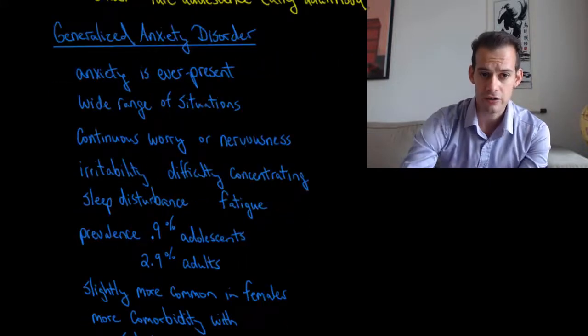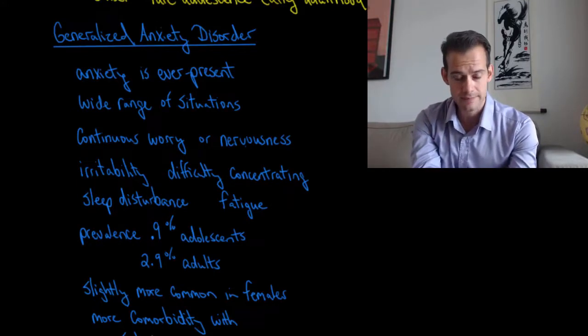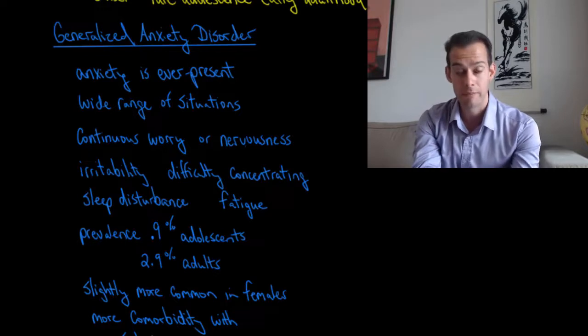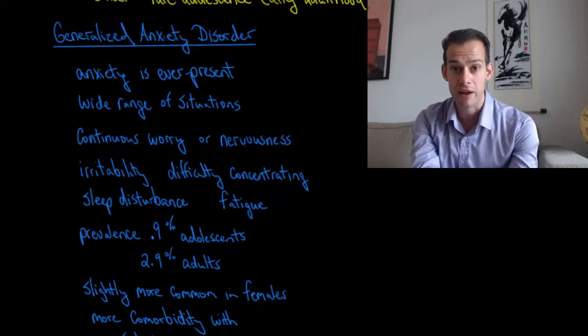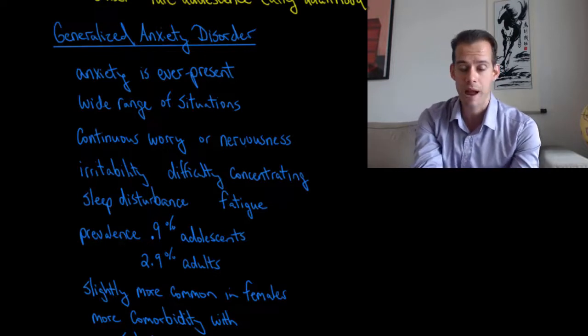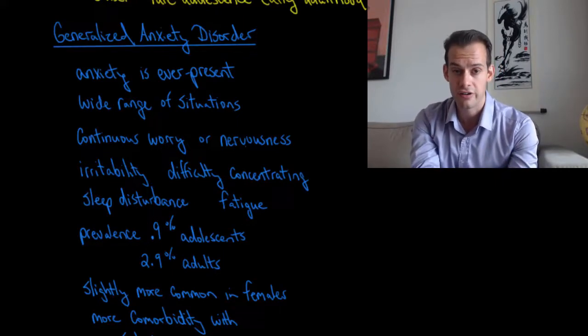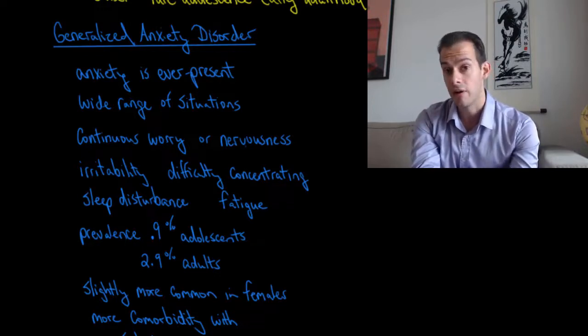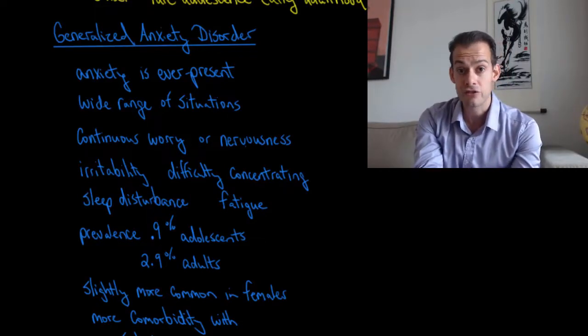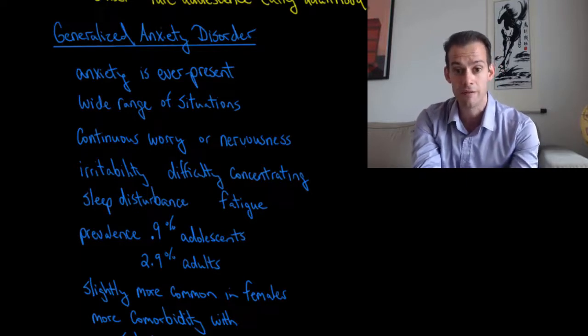All right next we have generalized anxiety disorder and the previous disorders that we've looked at have had these intense episodes of fear or anxiety whether it's a panic attack or in the presence of a specific object but in generalized anxiety disorder the anxiety is ever present and it happens in a broad range of situations. So people feel continuous worry perhaps they are constantly feeling worried about the health or safety of their family members or they experience ever-present nervousness maybe at work and as a result of this constant worry and nervousness they often are irritable, they'll have difficulty concentrating, they often have sleep disturbance and as you'll see in future videos sleep disturbance is common in a broad range of mental disorders, and they also experience fatigue as a result of being constantly on edge.